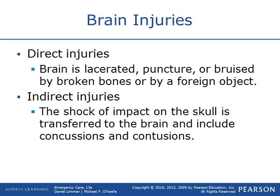With skull injuries there are open and closed types; with brain injuries there are direct and indirect injuries. A direct injury is where the brain itself is actually damaged — bruised or punctured, a cut to the brain. Indirect injuries are where the impact of the skull transfers force to the brain, causing the brain to smack the skull surface, such as in concussions and brain contusions.